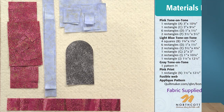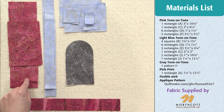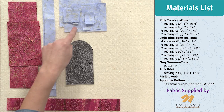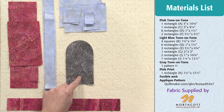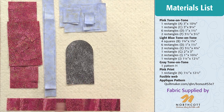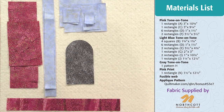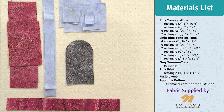For this block you will need a pink for the castle, light blue for the sky, grey for the door, and a dark pink for the bottom of the castle. You can find the cutting dimensions on the right hand side of your screen.